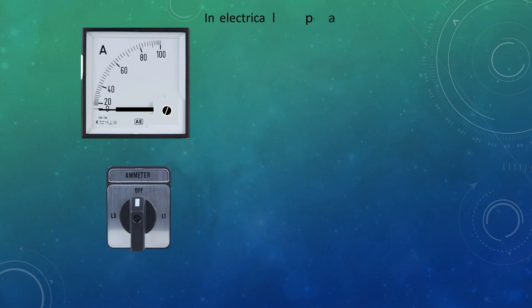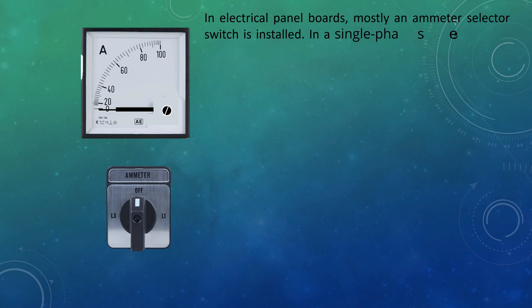In electrical panel boards, mostly an ammeter selector switch is installed. In a single phase system, we need only one ammeter with a current transformer to meter the total load in amperes.